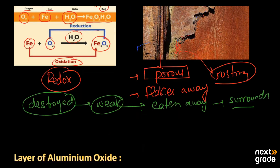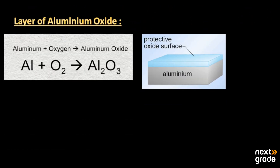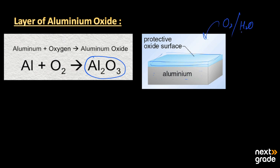Now we have the layer of aluminum oxide. When aluminum reacts with oxygen it makes a layer of aluminum oxide, Al2O3. This is the surface of aluminum, and it makes a layer of oxide over its surface when it comes in contact with oxygen and moisture. After the formation of this layer of Al2O3, this layer is a very tough layer.